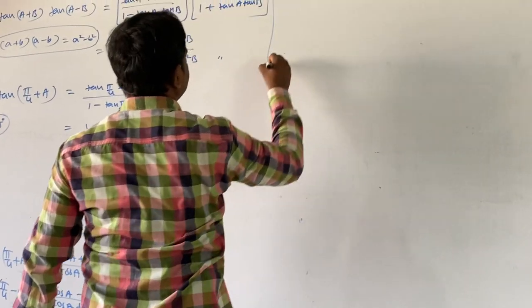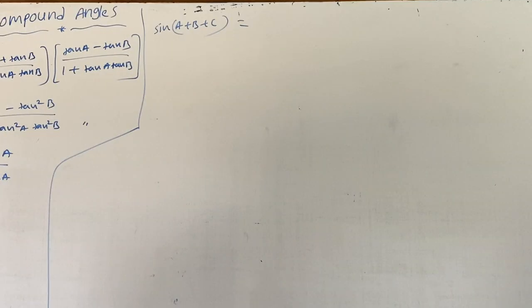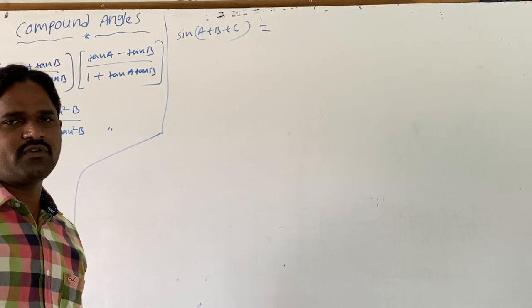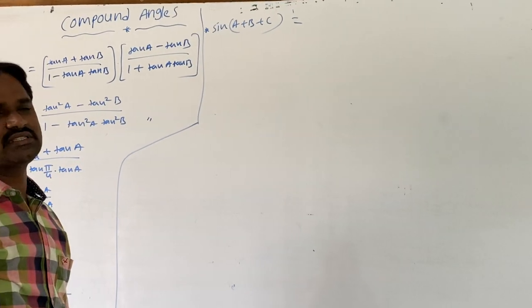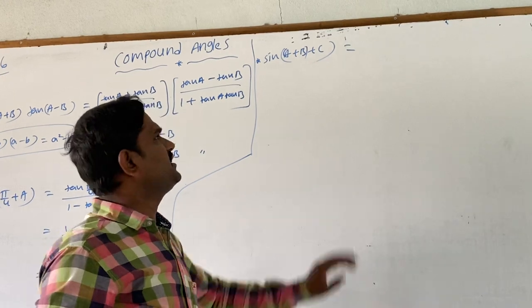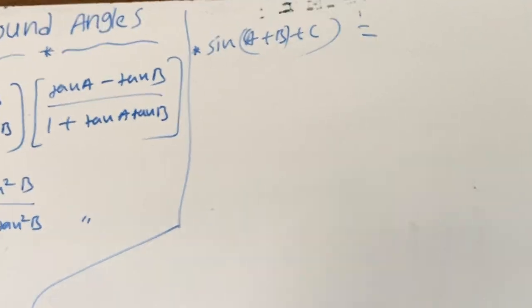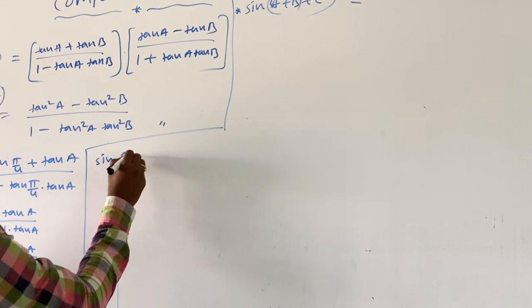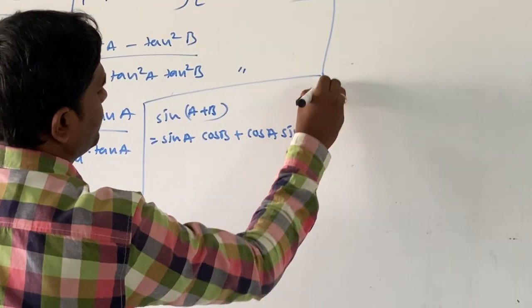The next topic is sin(A+B+C). Previously we discussed sin(A+B) and sin(A−B), cos(A+B) and cos(A−B) forms. Here we are adding three angles. To find sin(A+B+C), I divide it so that (A+B) is one term and C is the second term, and apply the sin(A+B) formula: sin(A+B+C) = sin(A+B)·cos C + cos(A+B)·sin C.